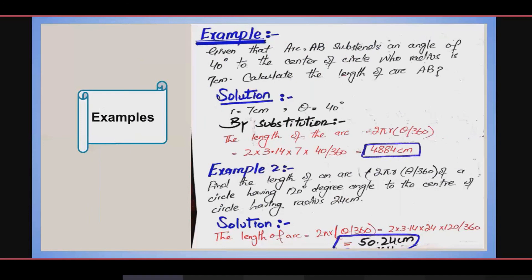In the second example, the values given are θ = 120 degrees and radius = 24 cm. We put these values into the formula 2πr × θ / 360, and we get the answer 50.24 cm. This is all about our today's presentation.